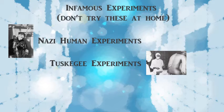Then there are the Tuskegee experiments, done in Alabama from the 1930s through the 1970s. Scientists basically gave a group of African-American men syphilis — purposefully infected them — and told them they didn't have the disease and to not seek treatment. The men would report symptoms and be told nothing was wrong. The idea was to create a control group to compare the progression of syphilis, with no concern for what happened to the subjects in the process.